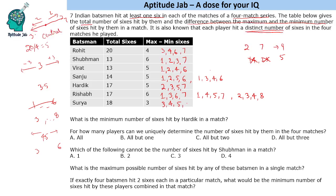That is the easiest way to get these numbers. Now answering the questions: what is the minimum number of sixes hit by Hardik in a match? The minimum is two.